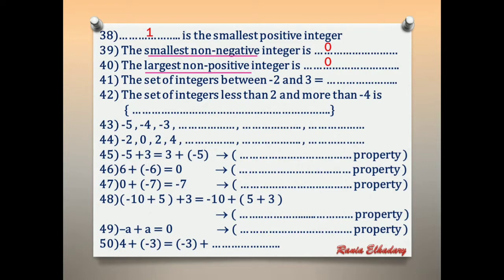Number 41: the set of integers between negative 2 and 3. The integers between negative 2 and 3 are: negative 1, 0, 1, 2.